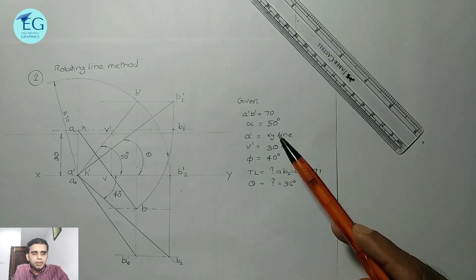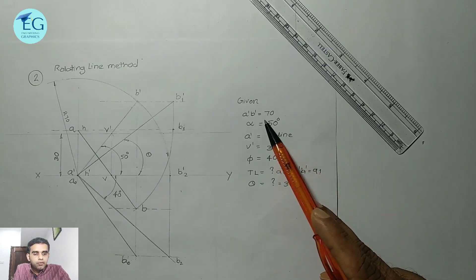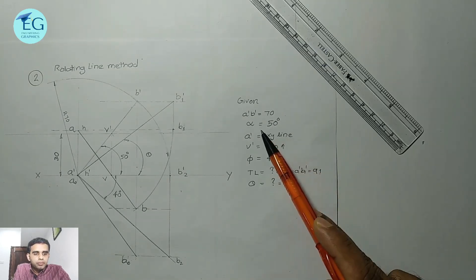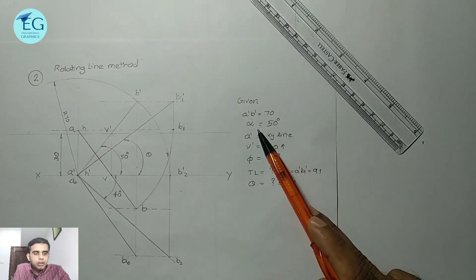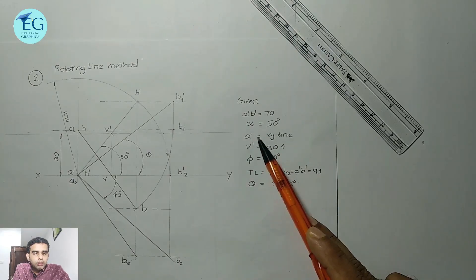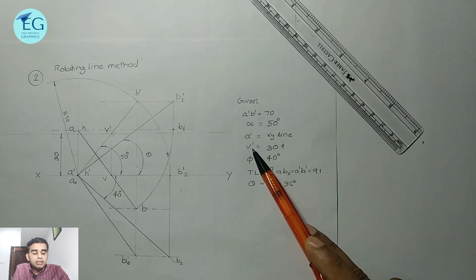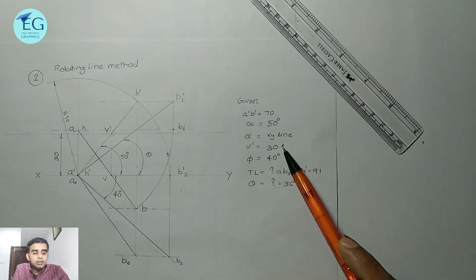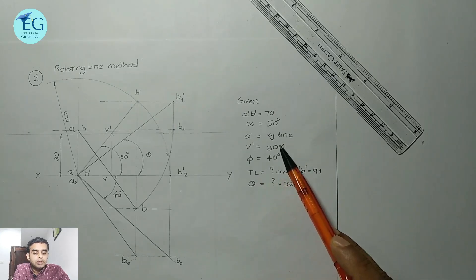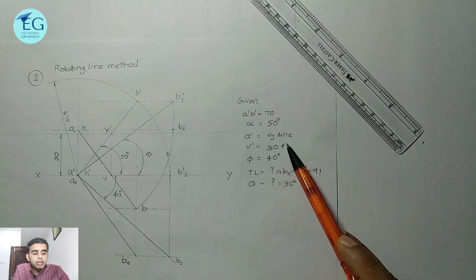The given data: front view A'B' equals 70 mm. The inclination of the front view is alpha equal to 50 degrees. A' is on the XY line. The vertical trace is 30 mm above the HP, meaning the vertical trace of the front view, V', is 30 mm above the XY line.